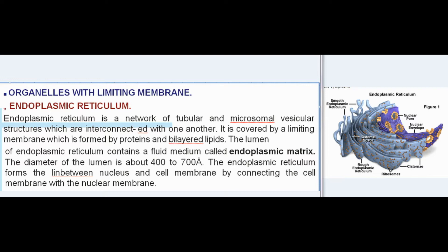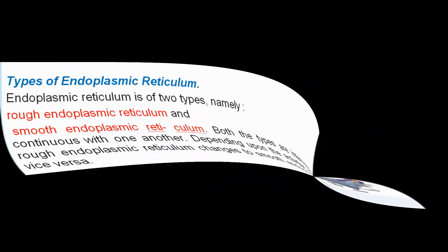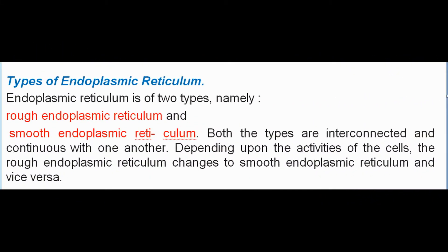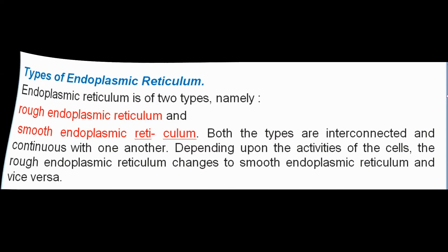The endoplasmic reticulum forms the link between the nucleus and cell membrane by connecting them. Endoplasmic reticulum is of two types: rough endoplasmic reticulum and smooth endoplasmic reticulum. Both types are interconnected and continuous with one another. Depending upon the activities of the cells, the rough endoplasmic reticulum changes to smooth and vice versa.